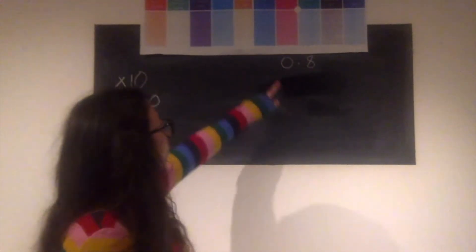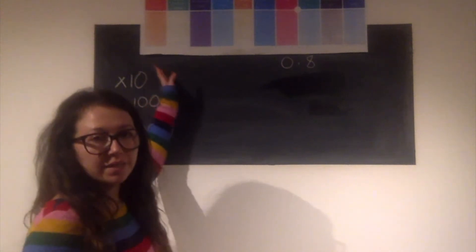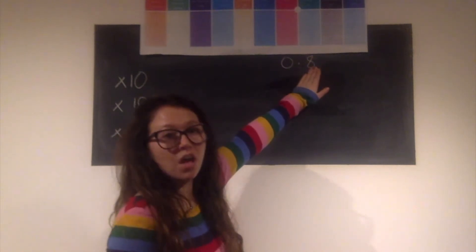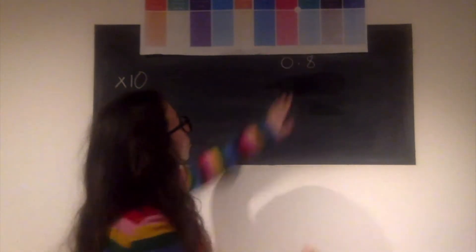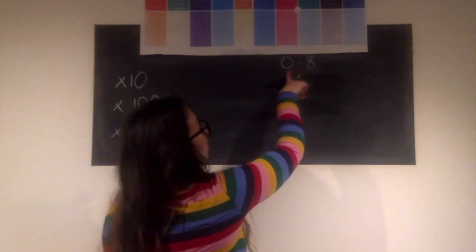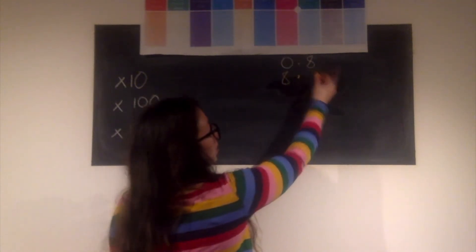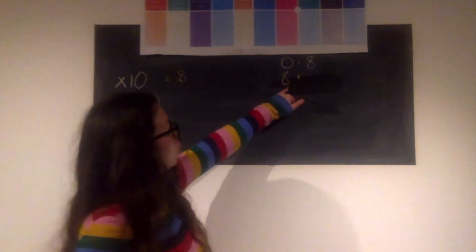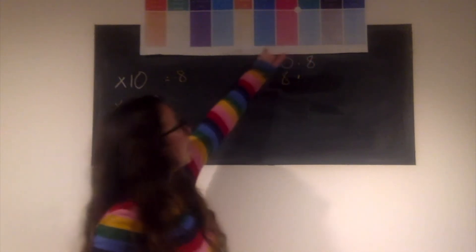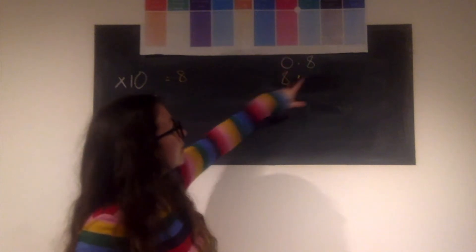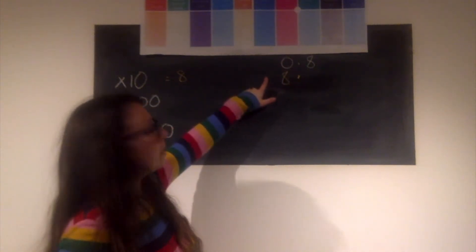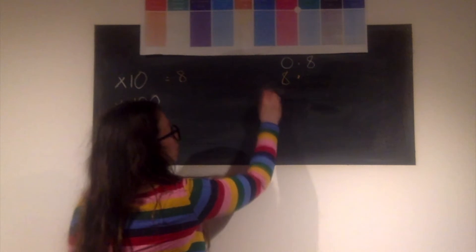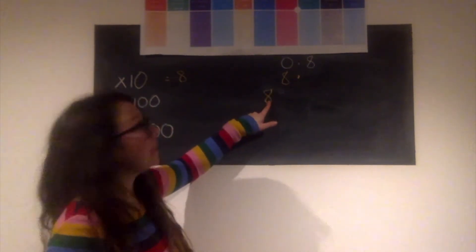Let's go through this together, starting with 0.8. Remember, to multiply by 10 we move all our digits one place to the left. I started with 8 tenths; making it 10 times bigger, my 8 moves over — the decimal point doesn't move — so times by 10 gives 8. To multiply by 100, I move two places to the left, so my 8 ends up in the tens column.